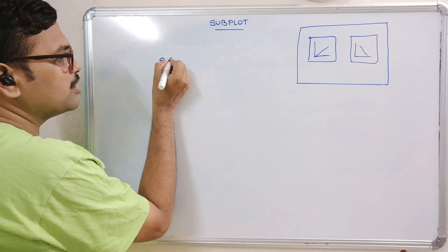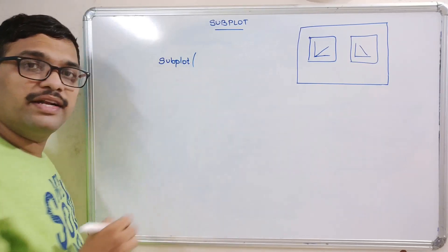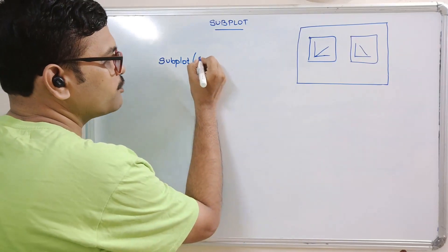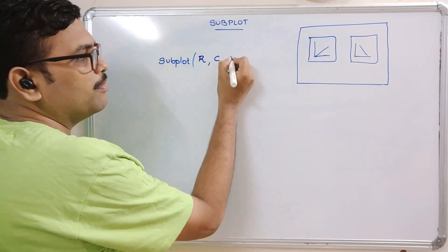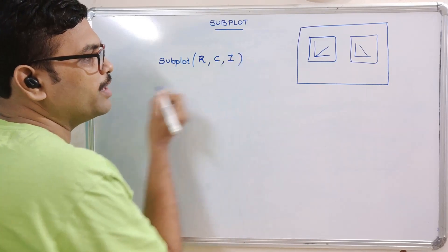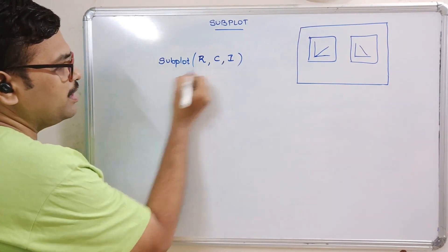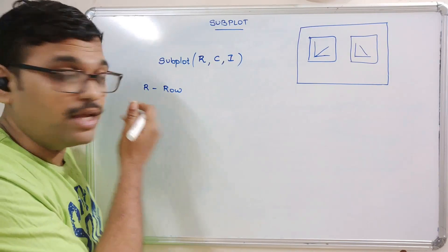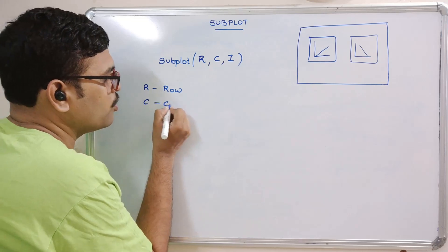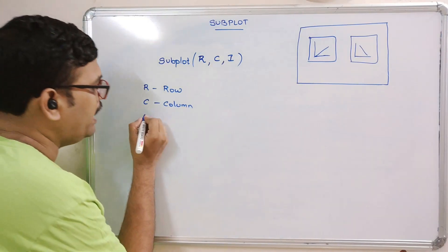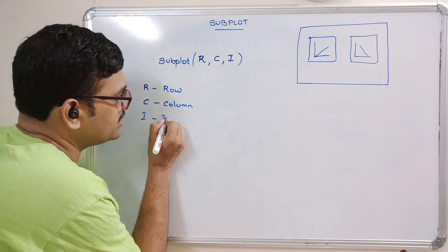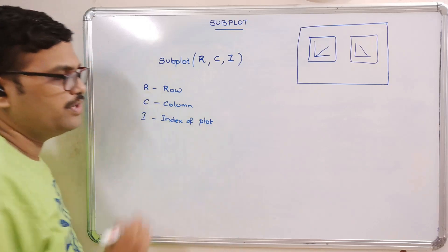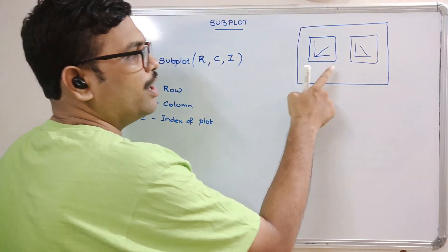The subplot function takes three arguments. The first one represents the row, the second one represents the column, and the third argument represents the index. R represents the row — how many rows we want to display — C represents how many columns we need, and I is the index of the plot.